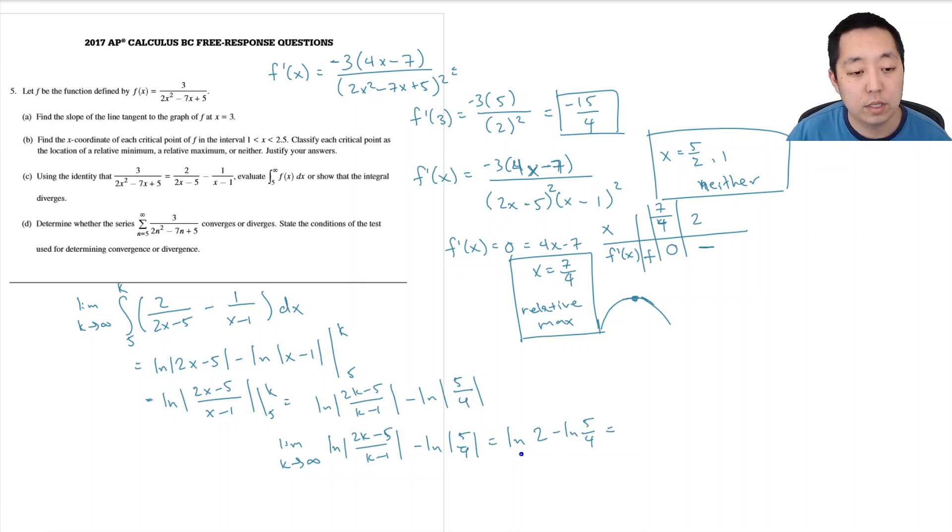And again, because there's a difference here. I can do, the difference of logs is just dividing. ln of 2 over 5 fourths is equal to ln of 8 fifths. So that is the value of the area there.